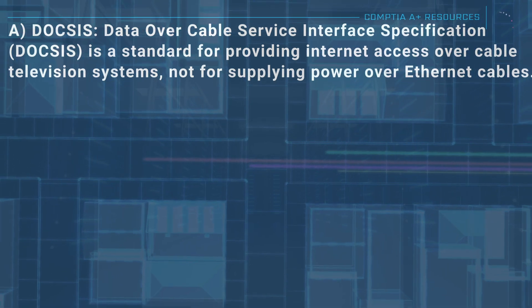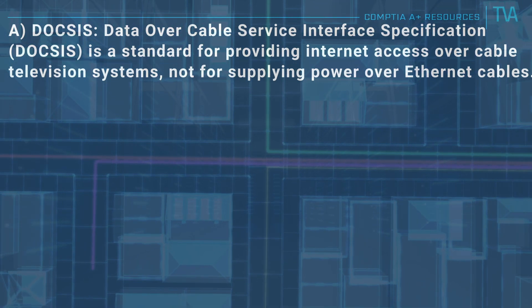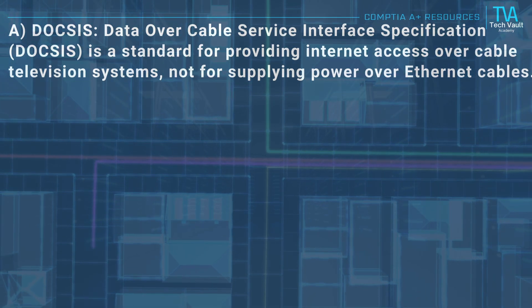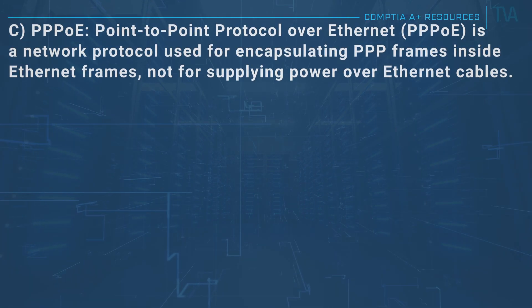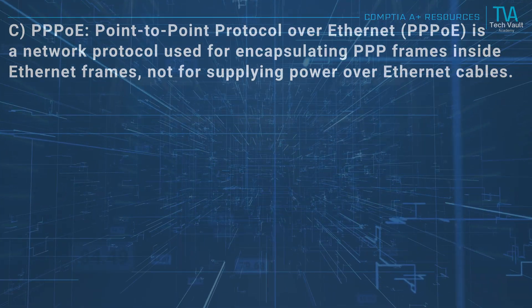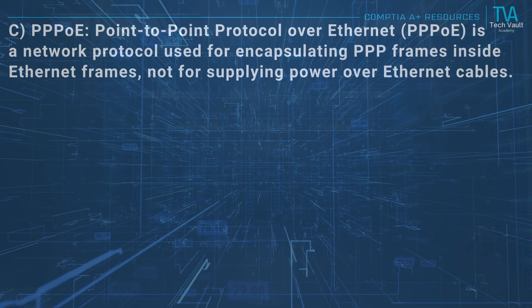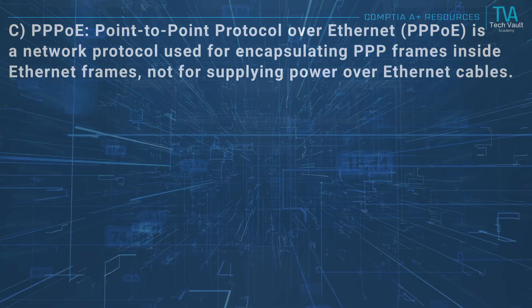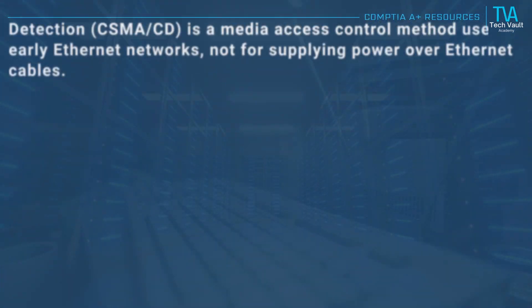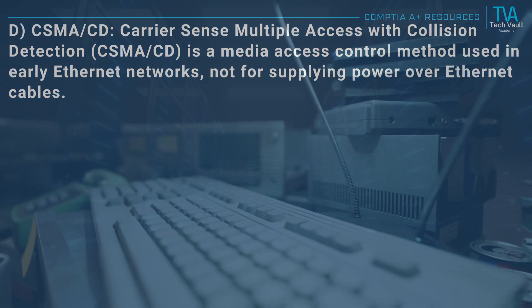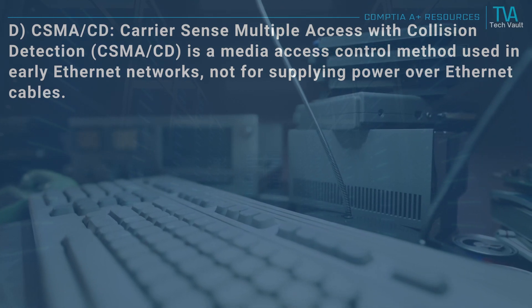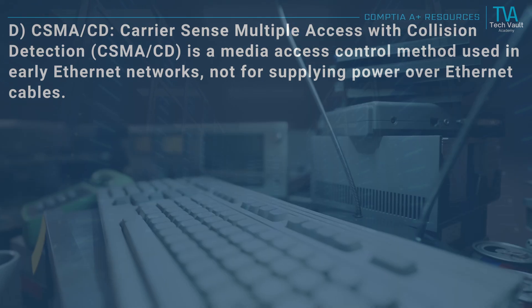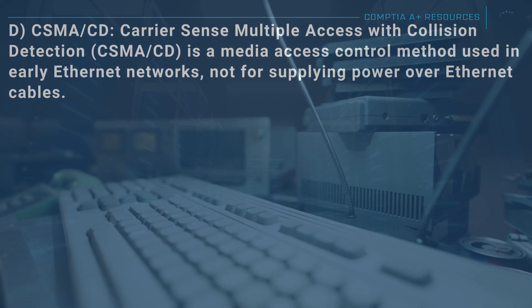A, DOCSIS: Data Over Cable Service Interface Specification is a standard for providing internet access over cable television systems, not for supplying power over Ethernet cables. C, PPPoE: Point-to-Point Protocol over Ethernet is a network protocol used for encapsulating PPP frames inside Ethernet frames, not for supplying power over Ethernet cables. D, CSMA/CD: carrier sense multiple access with collision detection is a media access control method used in early Ethernet networks, not for supplying power over Ethernet cables.